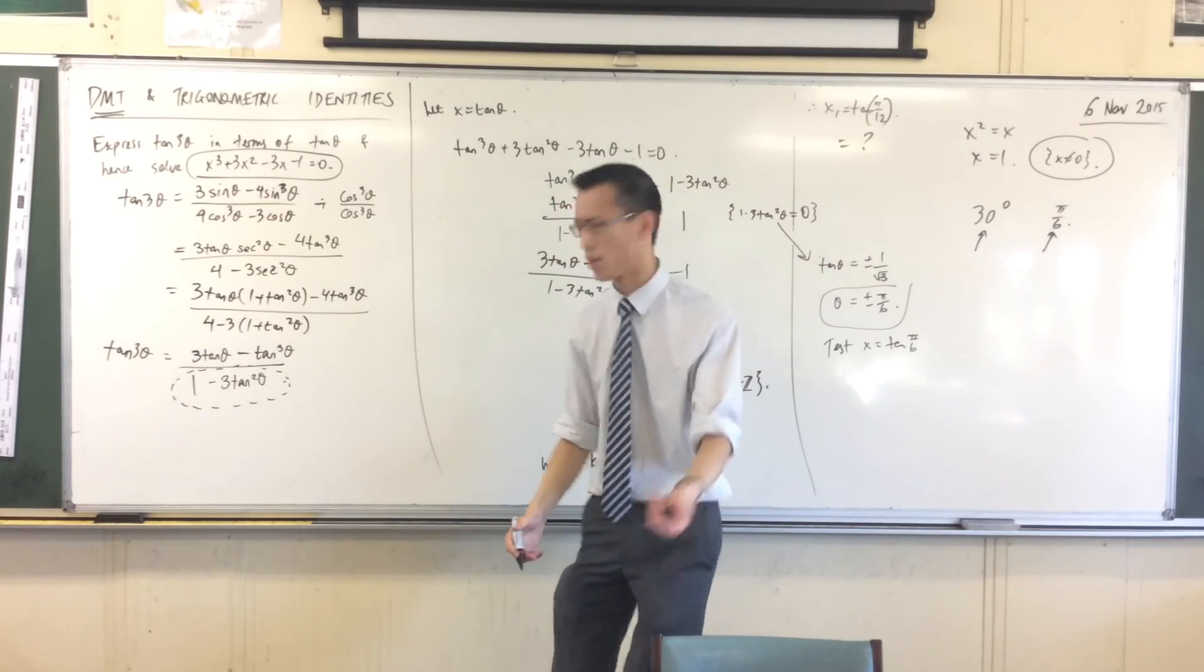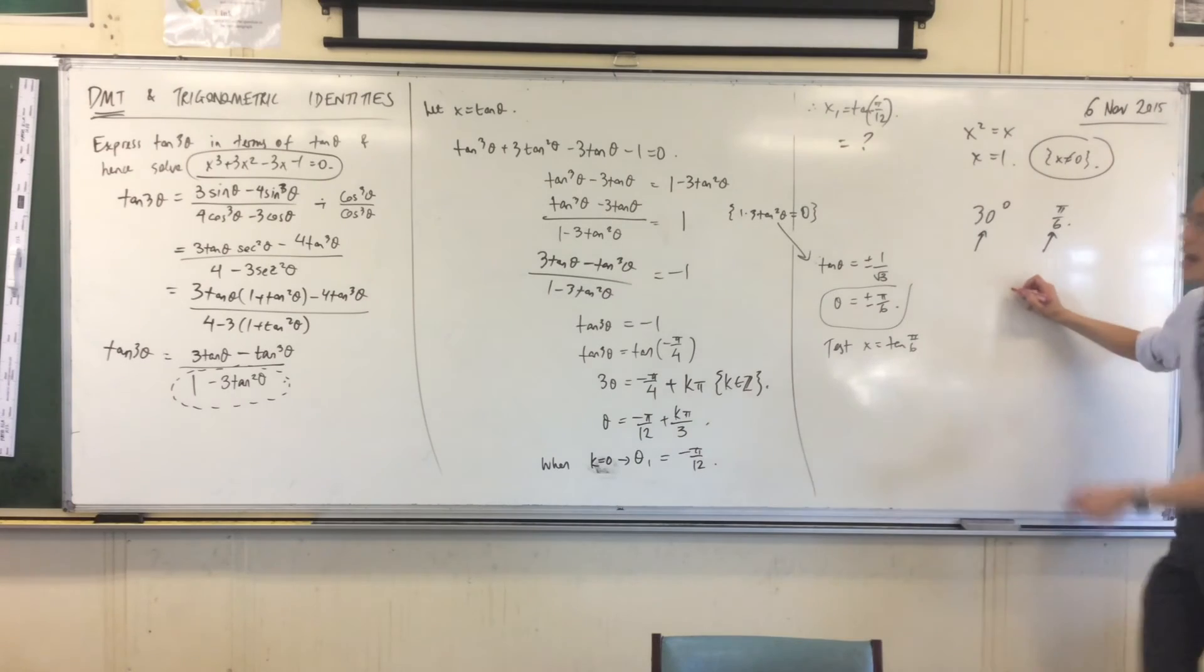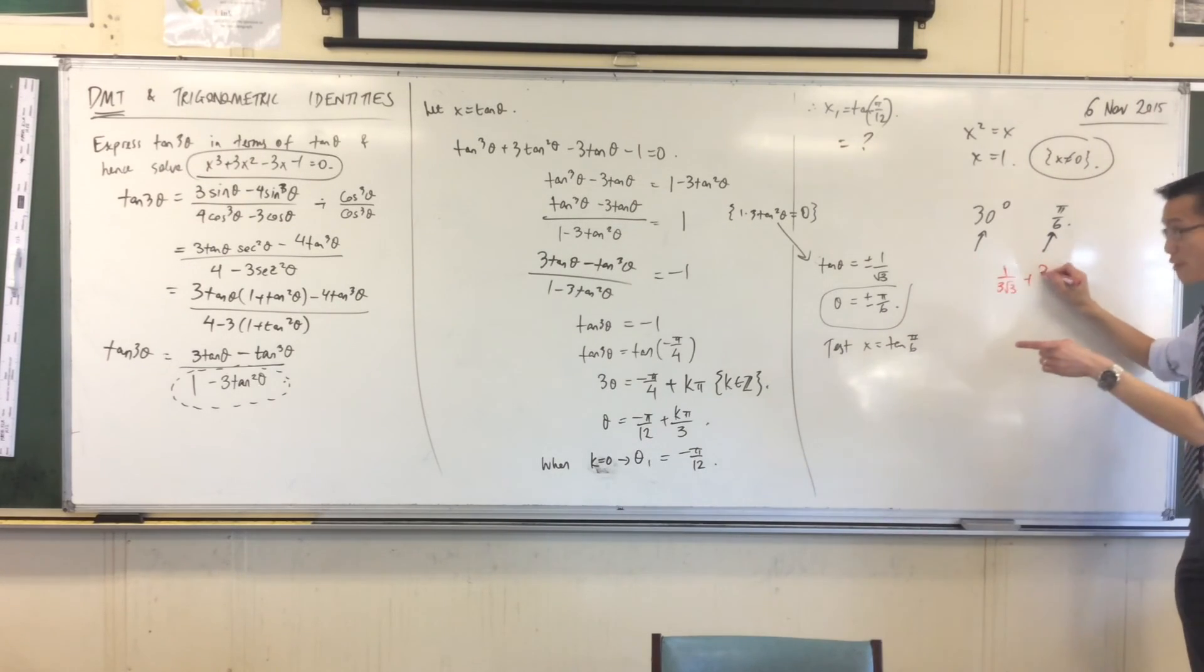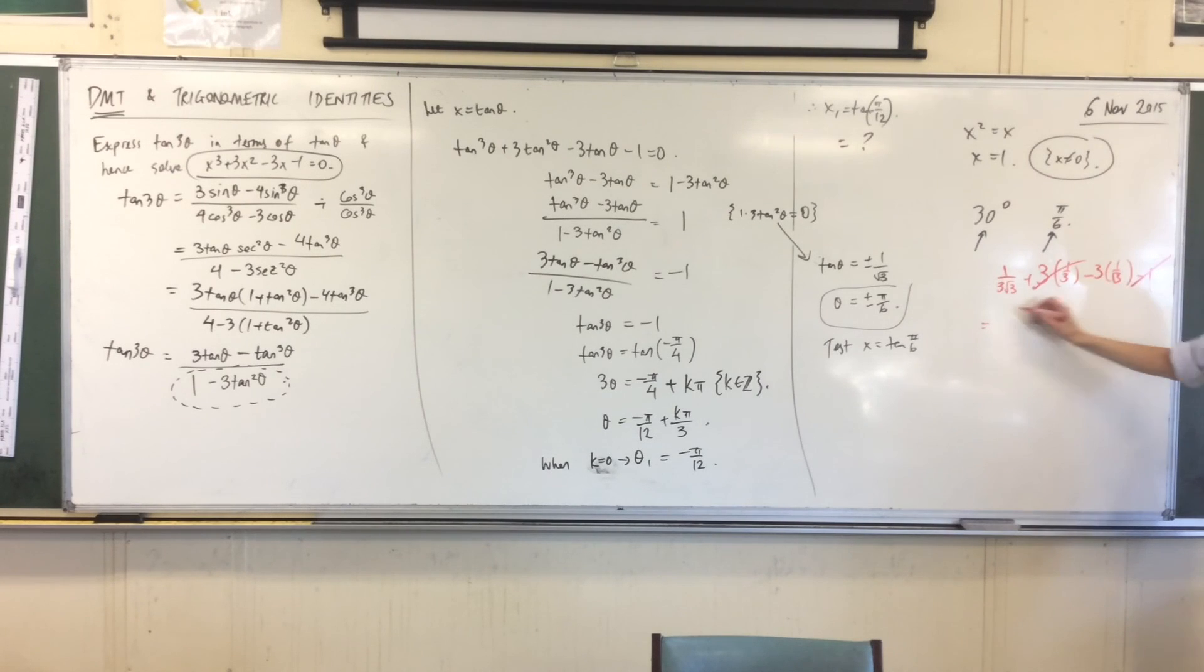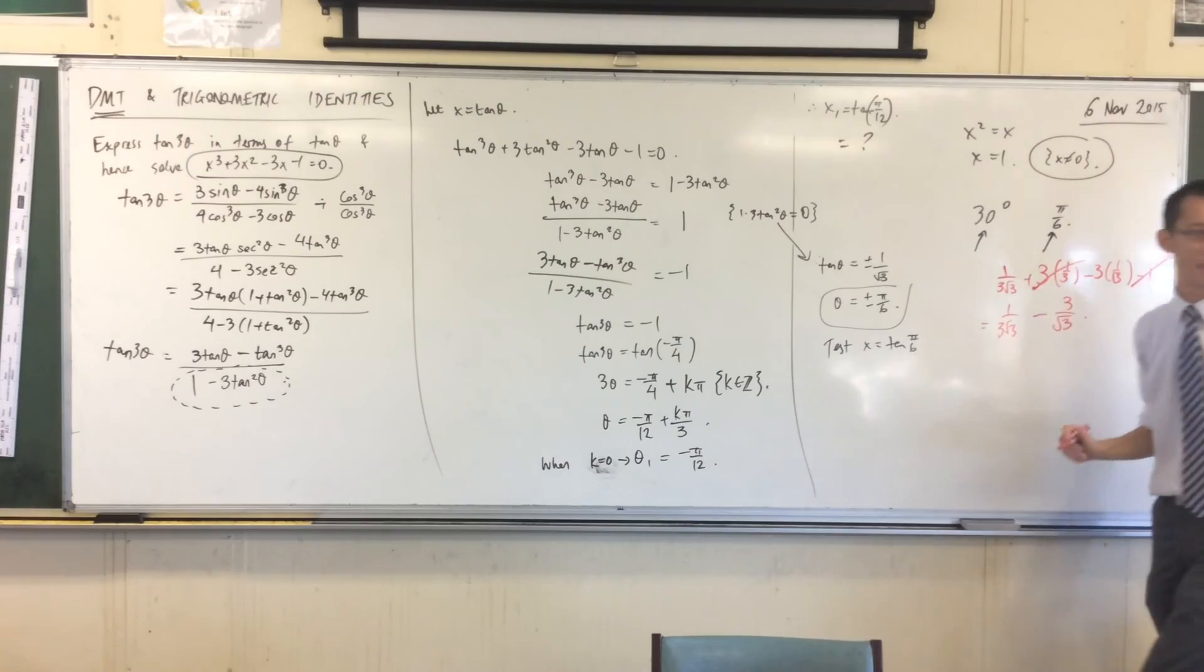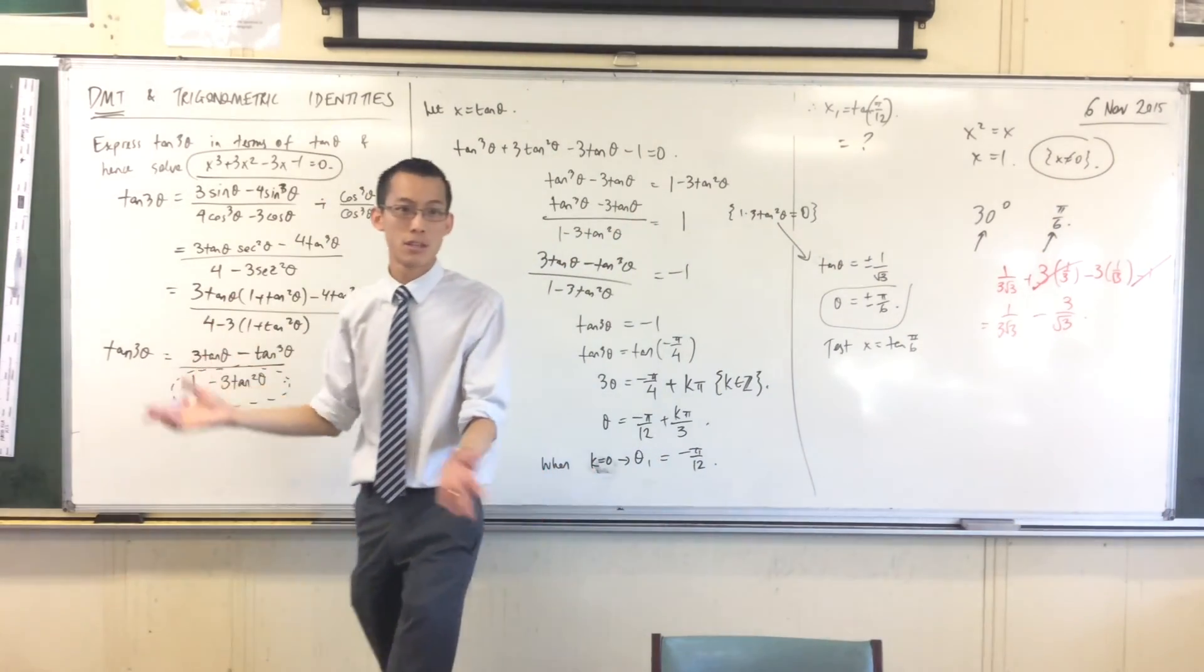1 on root 3 cubed is 1 on 3 root 3, isn't it? 1 on root 3, 3 lots of 1 on root 3 squared is a third, minus 3 of 1 on root 3, minus 1. What is this thing? Let's see. 3, that's 1. And that disappears over there. I've got 1 on 3 root 3 take away 3 on root 3. I don't care what that is. It's not 0. So it's not a solution. So I'm fine.